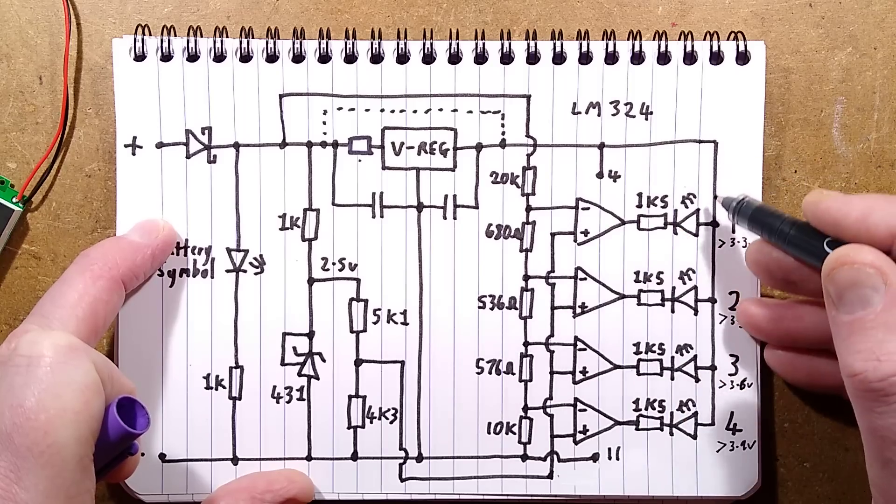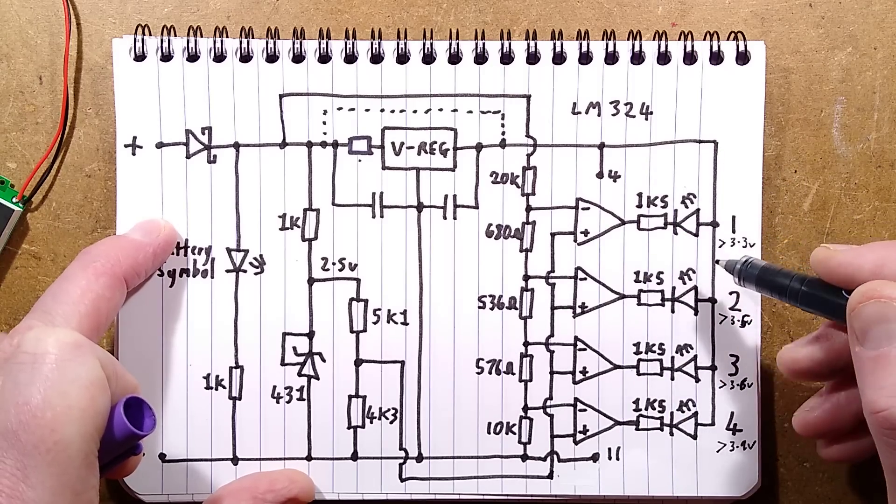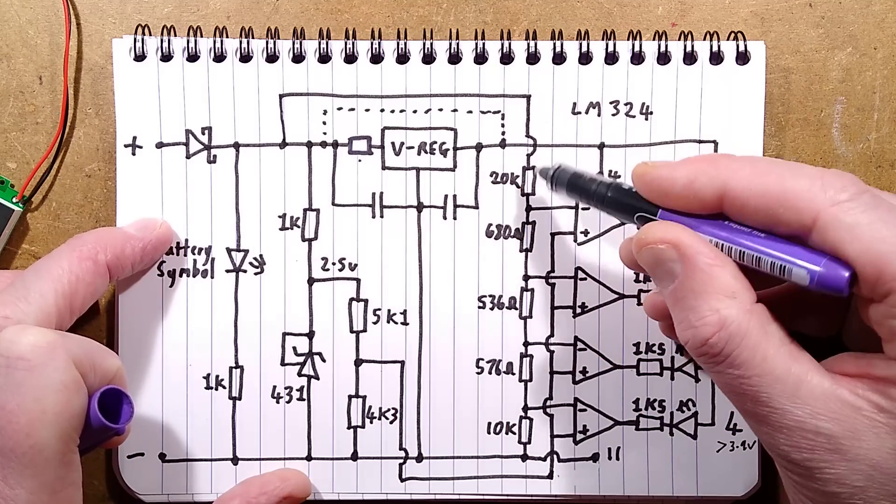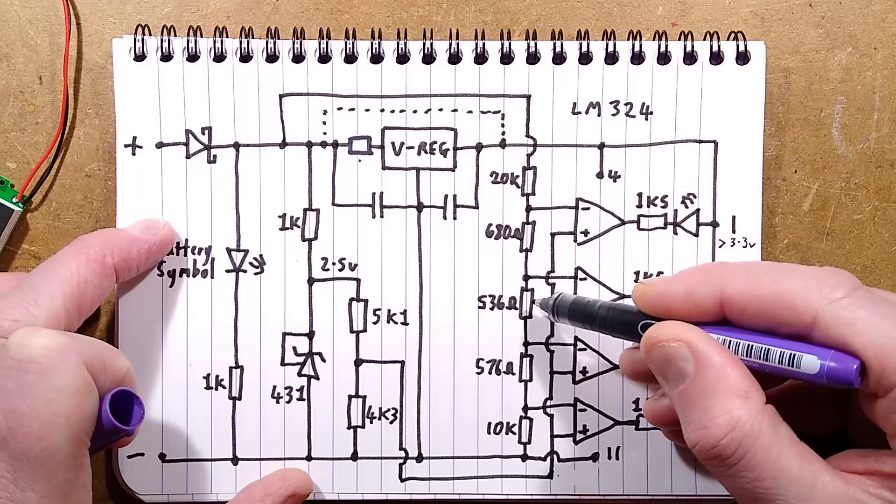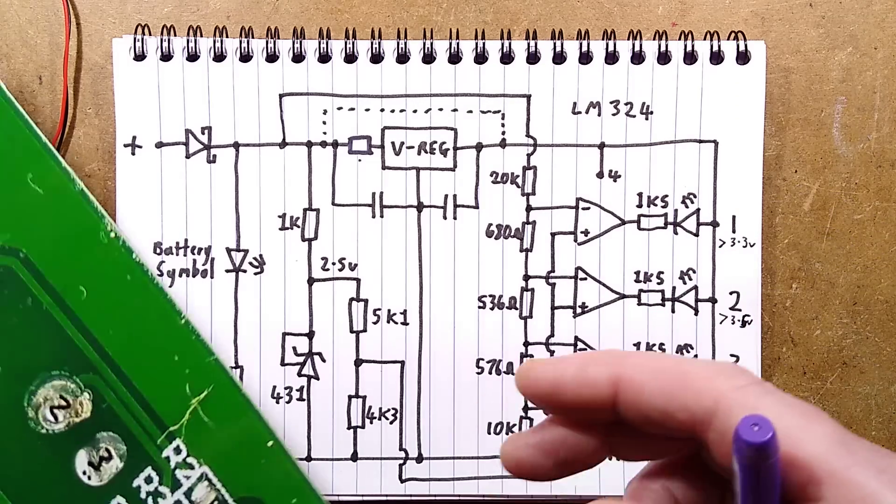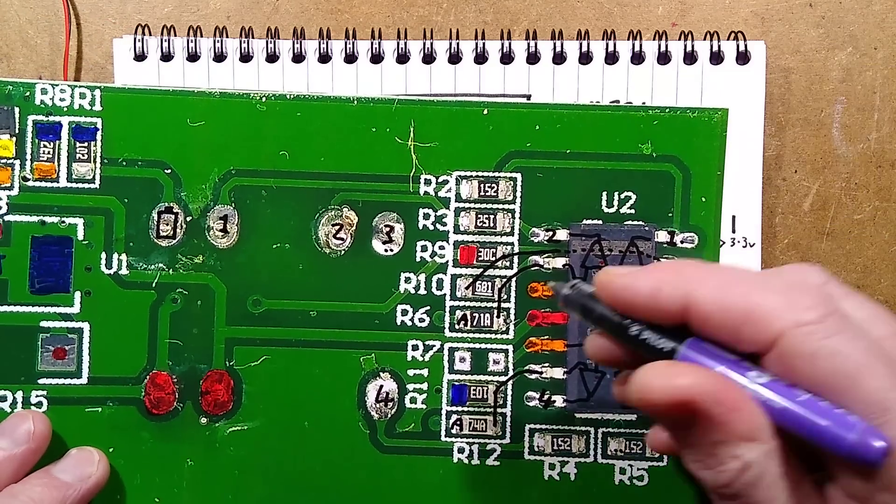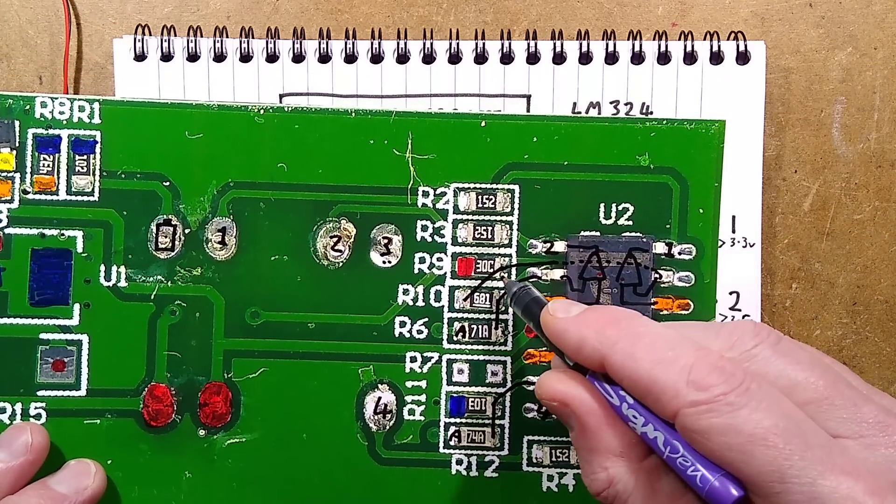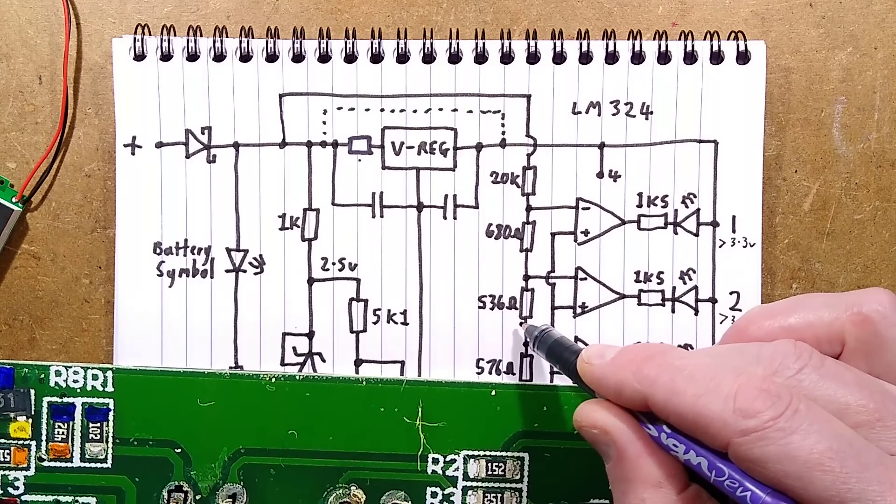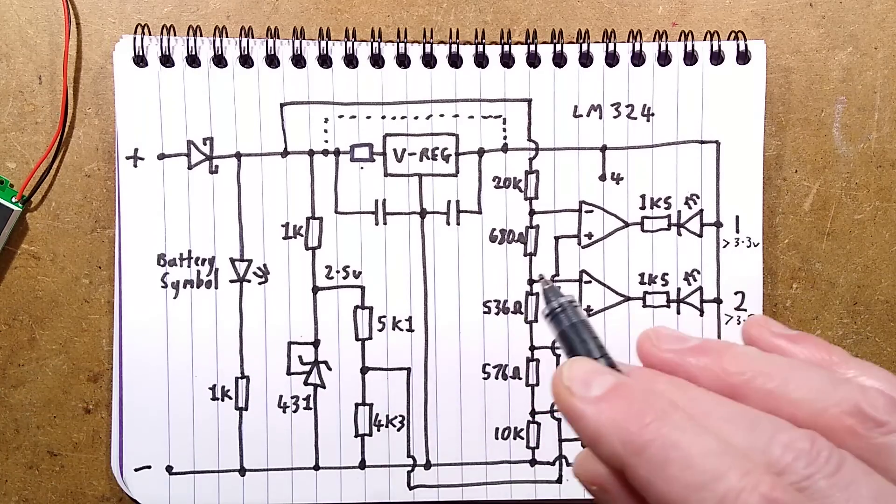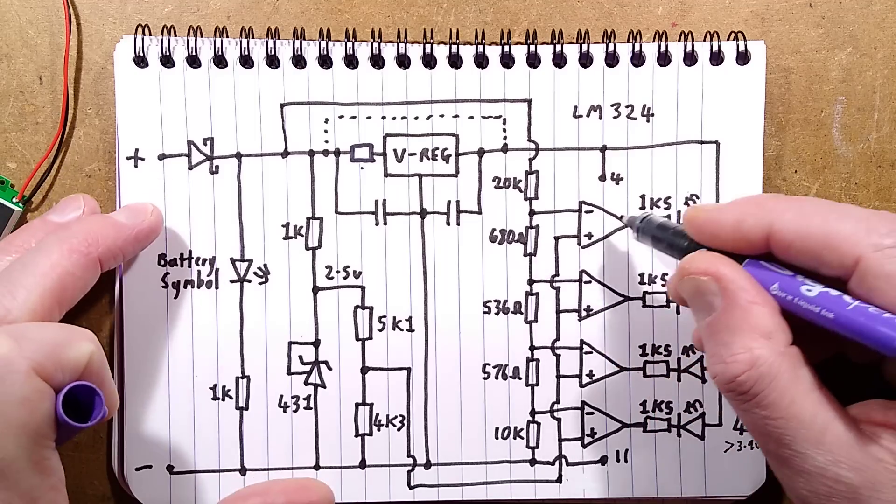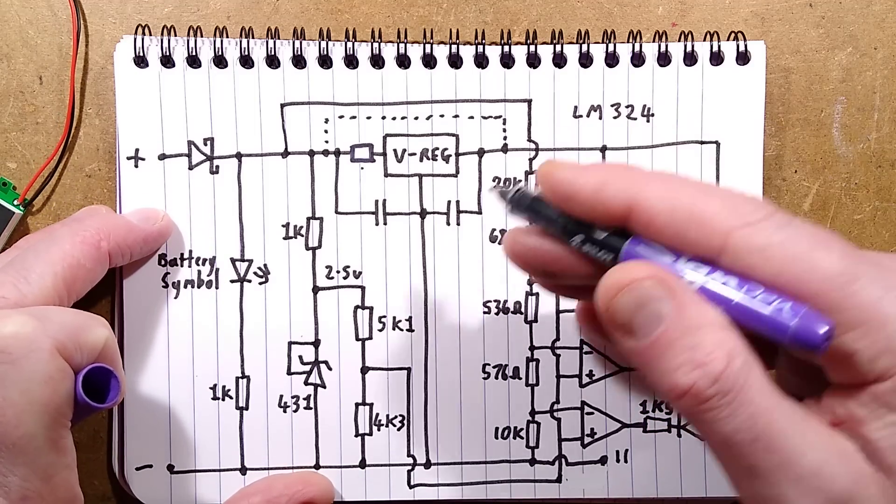The input also comes to this voltage divider based on high precision resistors. The resistors have values like 3oc, that's the 20k resistor, 680 ohms, and then 71a is actually 536 ohms. It's quite fine-tuned because these are crucial to the voltage levels.